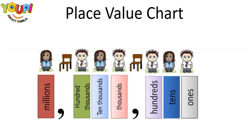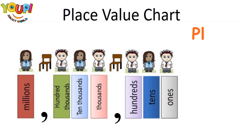Let us now learn about the place value of a number. Each digit in a number has its own value depending upon its position in the place value chart. Let us understand this by solving a few examples. For each digit we have in a number, we have to look at its place and its value.